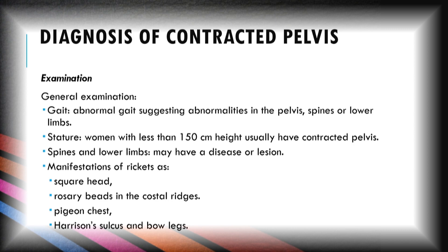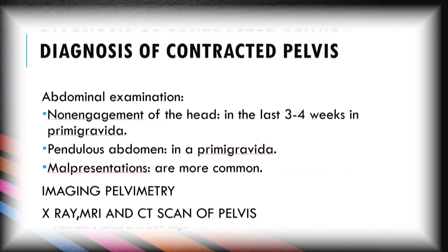We check the stature of the patient — women with less than 150 cm height usually have a contracted pelvis. We check for spine or lower limb diseases or lesions and the manifestations of rickets such as square head, rosary beads on the costal ridge, pigeon chest, Harrison's sulcus, and bow legs. On abdominal examination, non-engagement of the head is seen — usually seen in the last 3 to 4 weeks in primigravida — and pendulous abdomen. Malpresentations are also common. Pelvimetry can be done internally and externally; X-ray, MRI, and CT scan of the pelvis can also be performed.